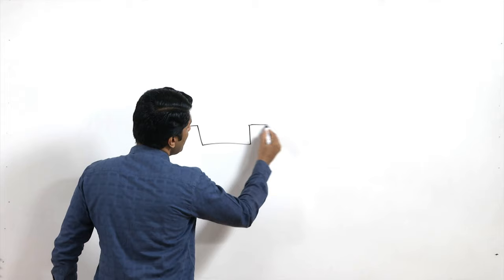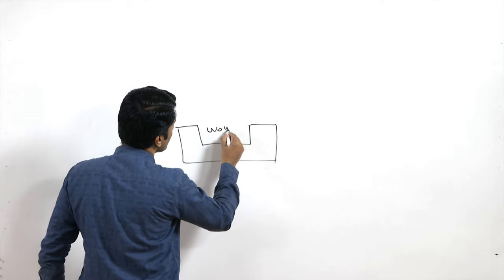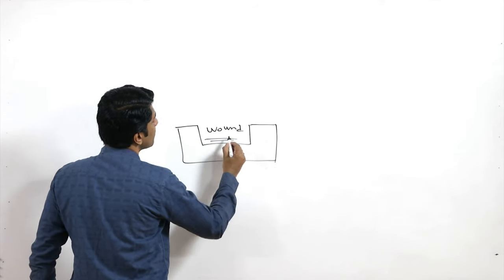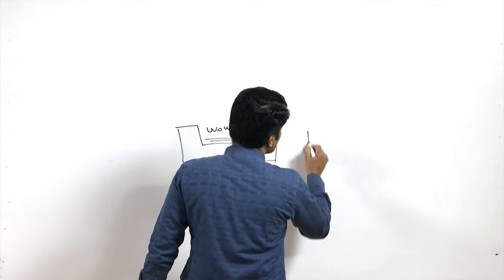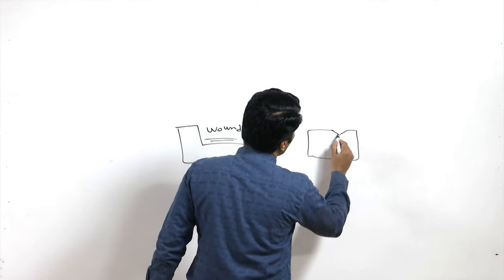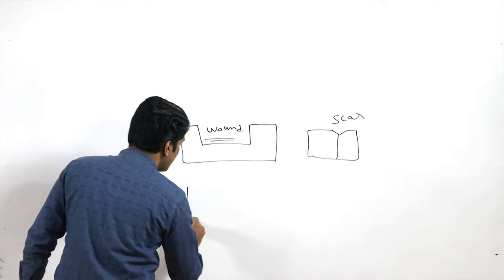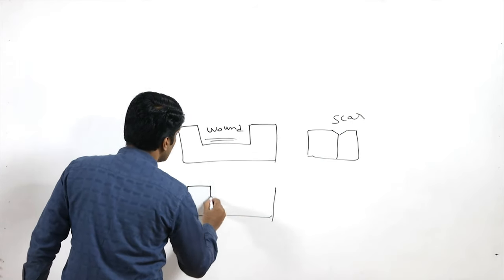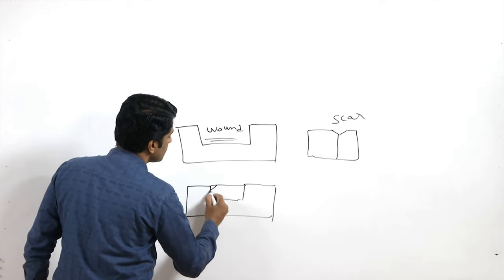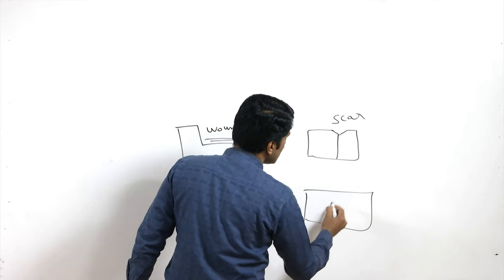Suppose you have a damage or wound on your skin — you are losing this much amount of cells. When the skin contracts, there will be formation of a scar. But when you replace the damaged cells with the scaffold, there will be no formation of scar.